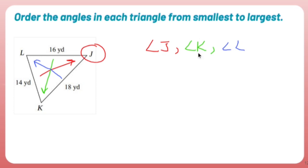So angle J, angle K, angle L, because you were the smallest, you were in the middle angle, and you are the largest side. And that's it.